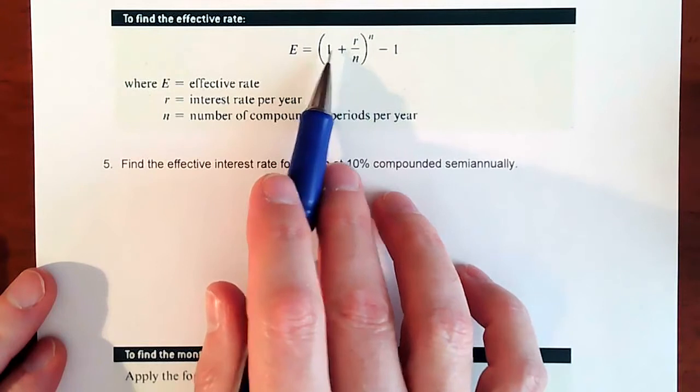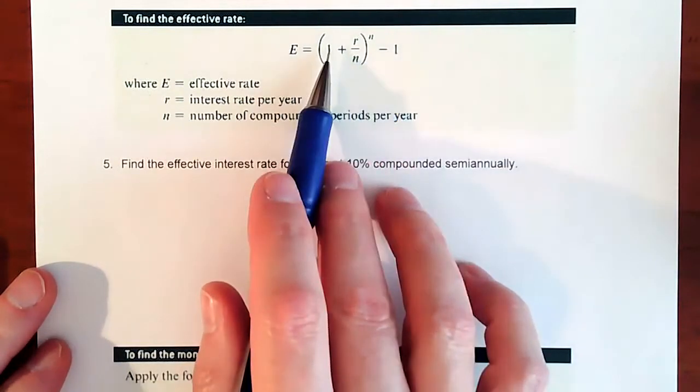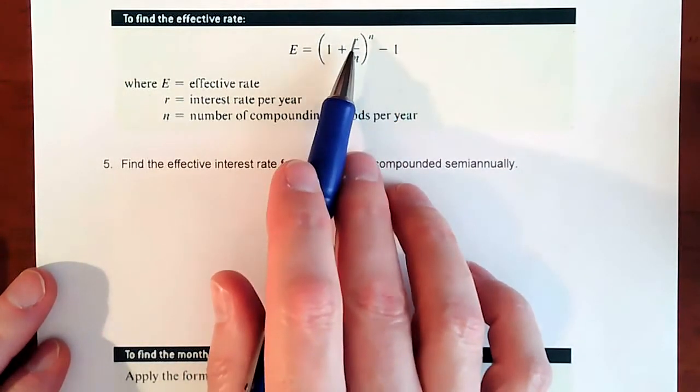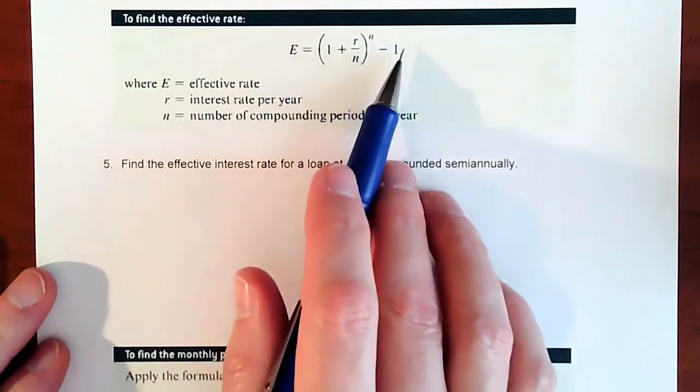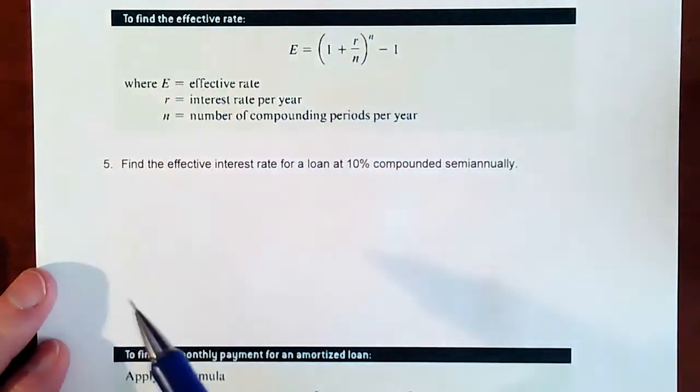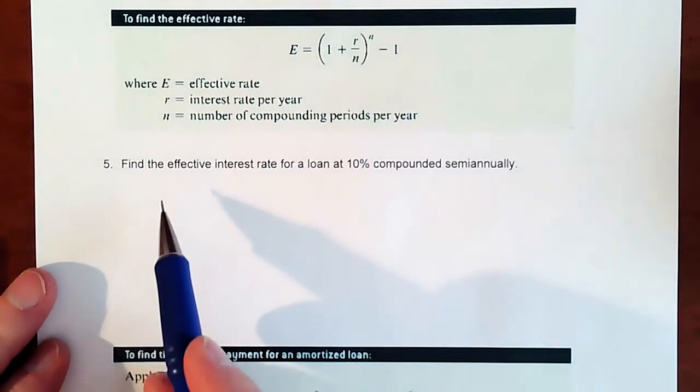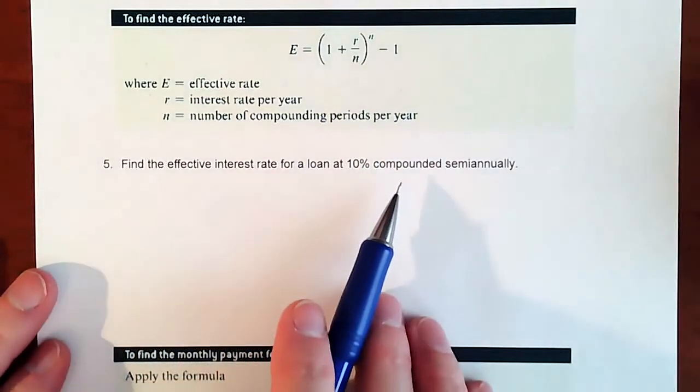And then you subtract the one back out. You start off by plugging in the values, adding the one, doing the math, and then you subtract the one out and that's going to leave you with the percentage. So to find it, we're actually going to do two examples and compare what the difference is.